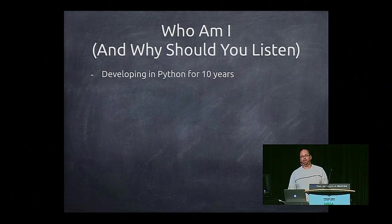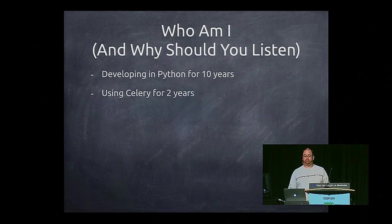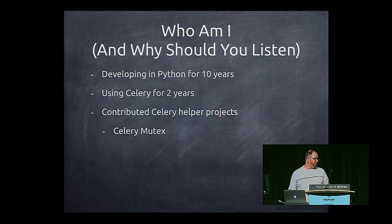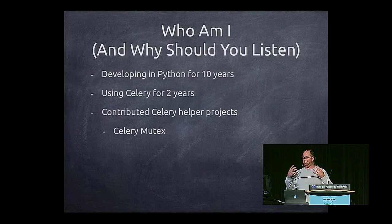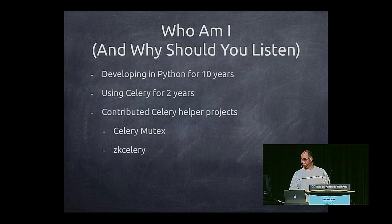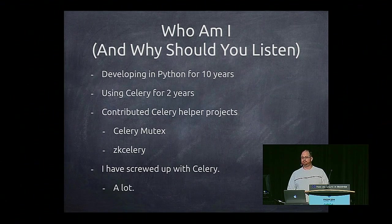I've been developing in Python for ten years. I've been using Celery for two years. I've released a couple of projects out there, one called Celery Mutex. It allows you to have a mutex on Celery to ensure it only executes once. Also working on another project called ZKCelery that takes a lot of the stuff I'll talk about today and puts it into one library to make it easy to merge Zookeeper and Celery. I also screwed up with Celery a lot.